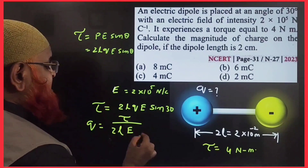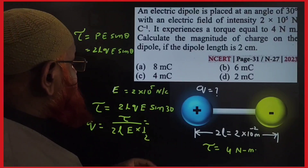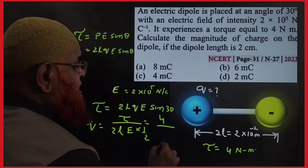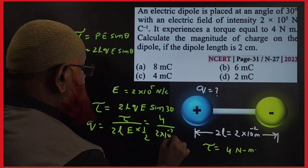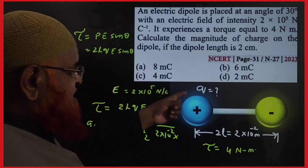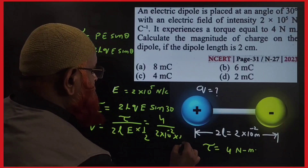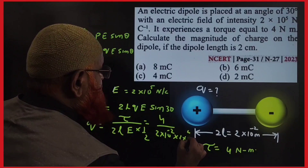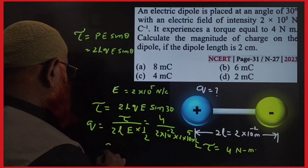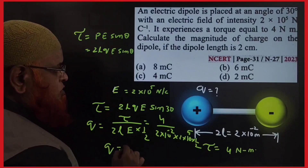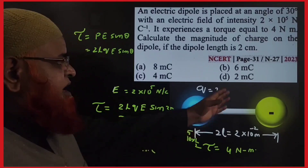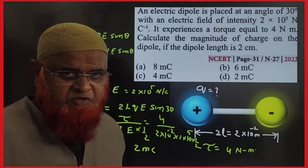Sine 30° is 1/2. The torque is 4, 2L is 2 × 10⁻², and E is 2 × 10⁵. Substituting these values, the charge Q works out to nearly 2 millicoulombs, which is option D.